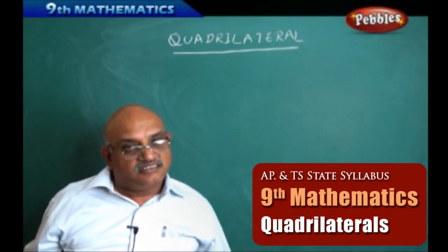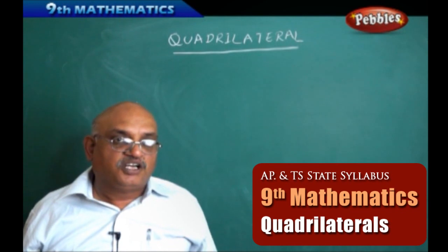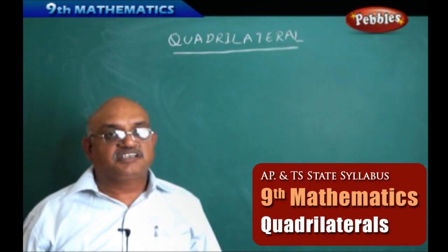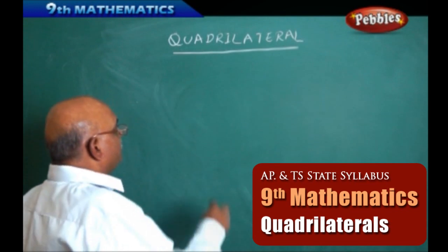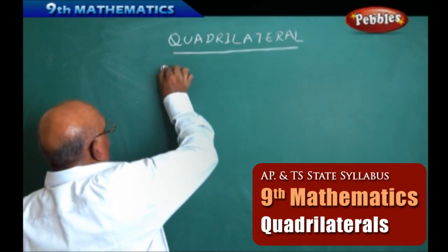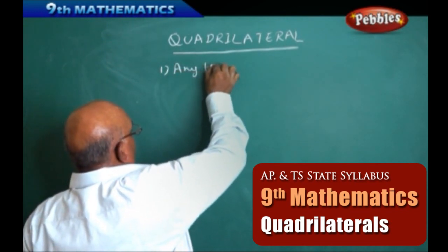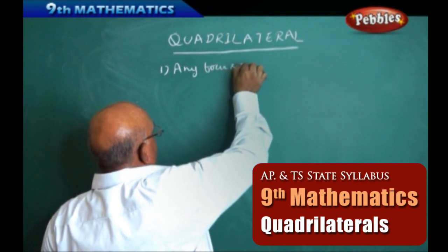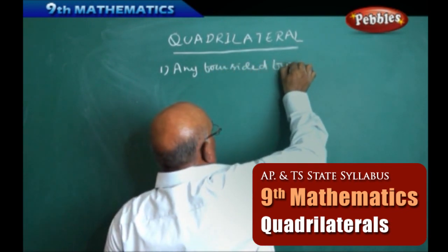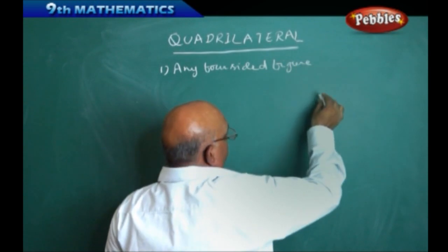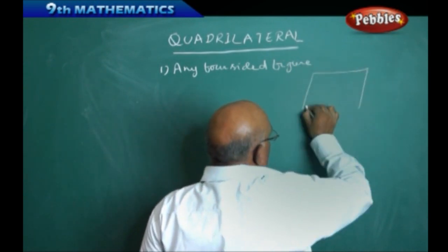What do we mean by a quadrilateral, what is its importance, and how is it going to be constructed? In this chapter we are going to see that. A quadrilateral is any four-sided figure, and four-sided figures may have many different dimensions.